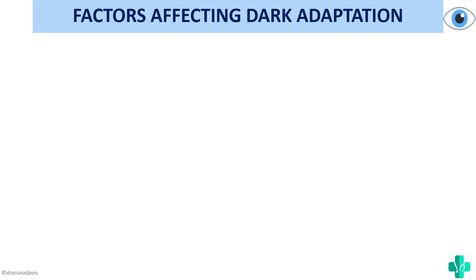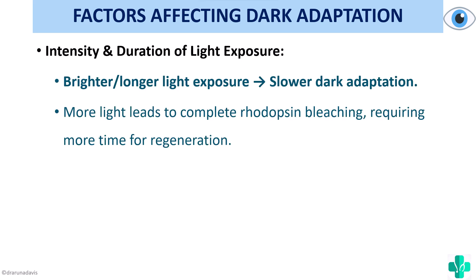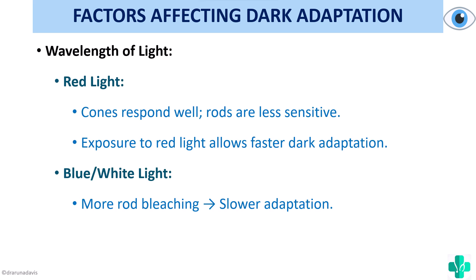Factors affecting dark adaptation: first, the intensity and duration of light exposure — longer or brighter light exposure leads to slower dark adaptation because more light causes complete rhodopsin bleaching, requiring more time for regeneration. Second, the wavelength of light — for red light, cones respond well but rods are less sensitive, meaning rods are not involved in red light vision. Therefore, exposure to red light allows faster dark adaptation because the rods are already ready. In blue or white light, more rod bleaching occurs, so adaptation takes longer.